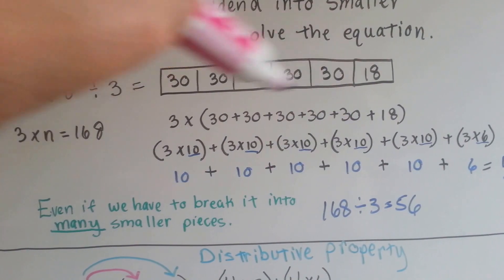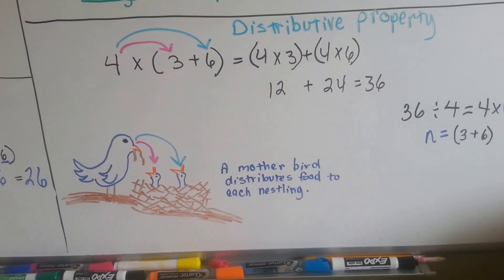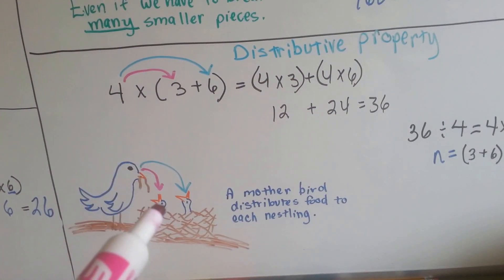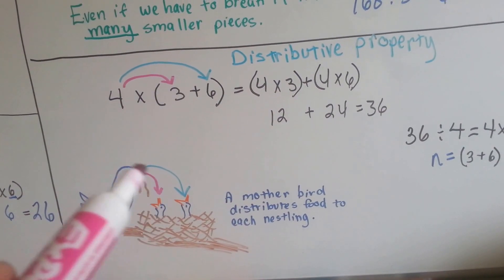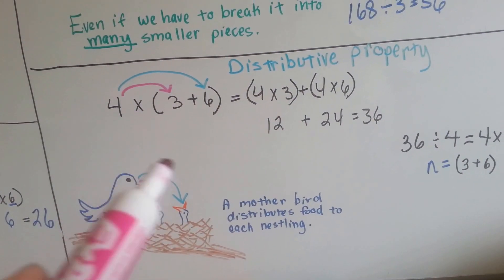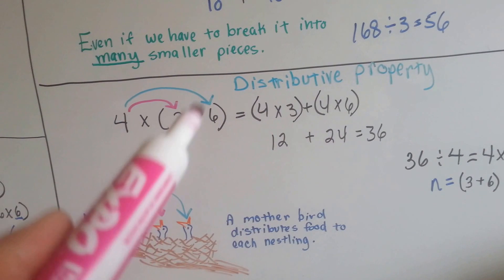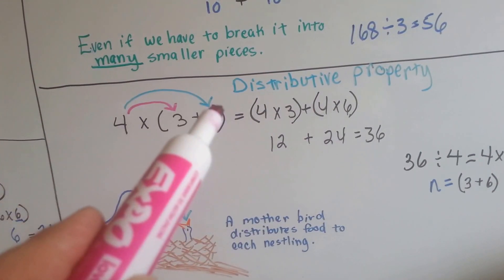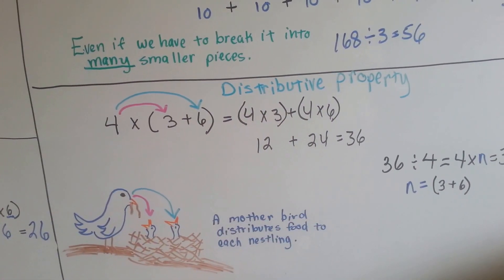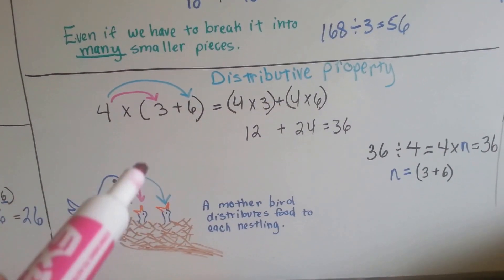So even if we have to break it into many small pieces, it'll still work. This is how I want you to think of the distributive property: think of a mother bird feeding her little nestlings in a nest. She distributes the worm to each bird, to each nestling. Just like the 4 is like the mother bird, and inside the parenthesis looks like a nest — the 4 goes to the 3, and then it goes to the 6. 4 times 3 is 12, 4 times 6 is 24, and that equals 36. So whenever you see the distributive property, think of the mother bird going and feeding her baby birds in the nest.